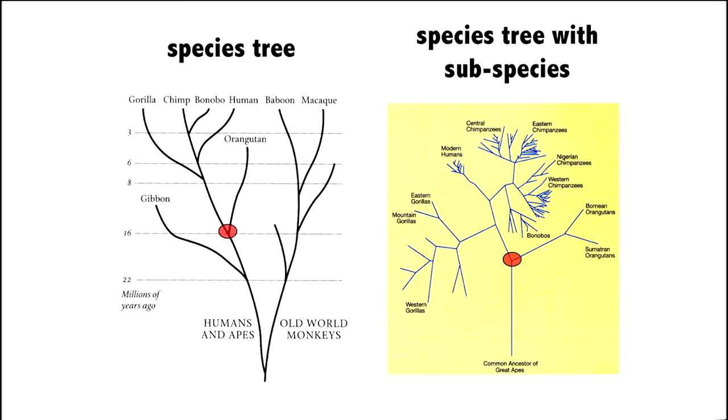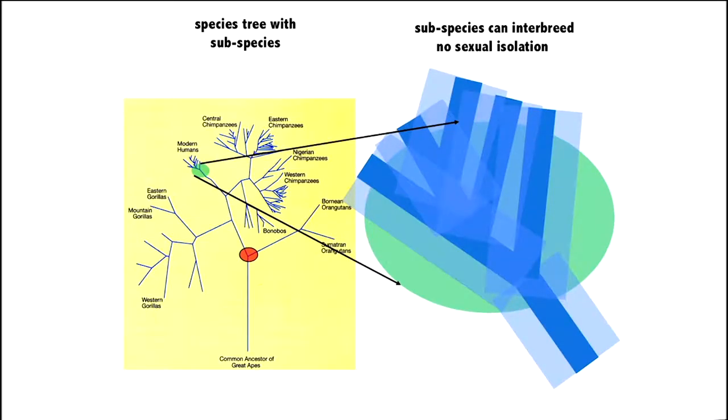Now, we want to take a look at how this, what it means to add subspecies. So, let's take a look at modern humans and how these different groups of humans start to diverge a little bit from each other, but are still not sexually isolated from each other. They can still interbreed. So, let's take another closer look.